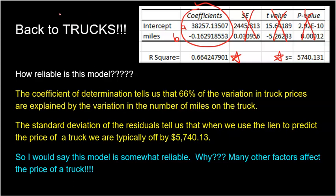Here are the answers I expect on a test or quiz. What does R-squared tell me? It tells me that 66% of the variation in truck prices — that's y — is explained by the variation in the number of miles on a truck. The number of miles on a truck clearly has something to do with the price, but it's just not a perfect connection. 66% of the variation in truck prices is explained by the variation in miles.